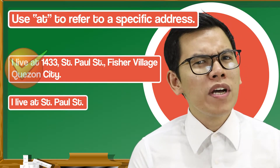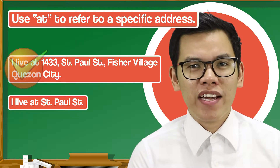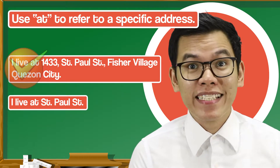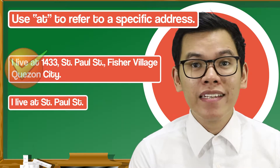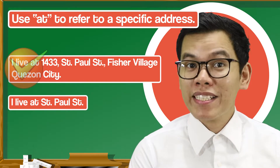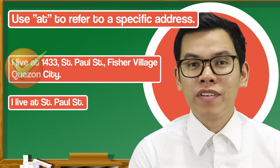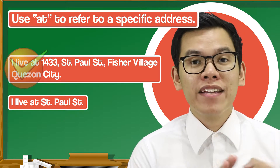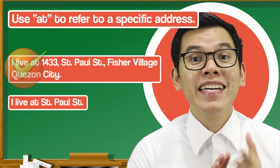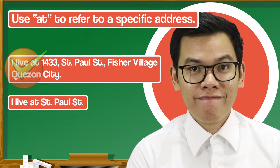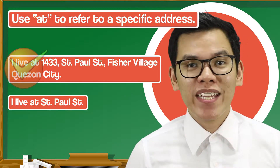What should be in a complete address? It should at least contain the building number, the name of the street, the village, the town, and even the city.